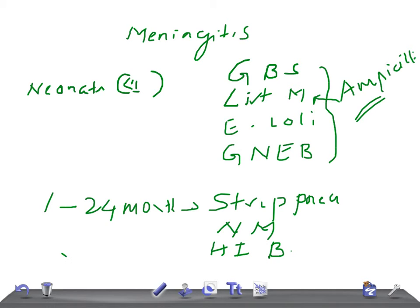Let's talk about children more than two years, more than 24 months. What's the most common cause? Again, the same: Strep pneumoniae, Neisseria meningitidis, and Haemophilus influenzae type B. The treatment is the same - third-generation cephalosporins and vancomycin should be added.